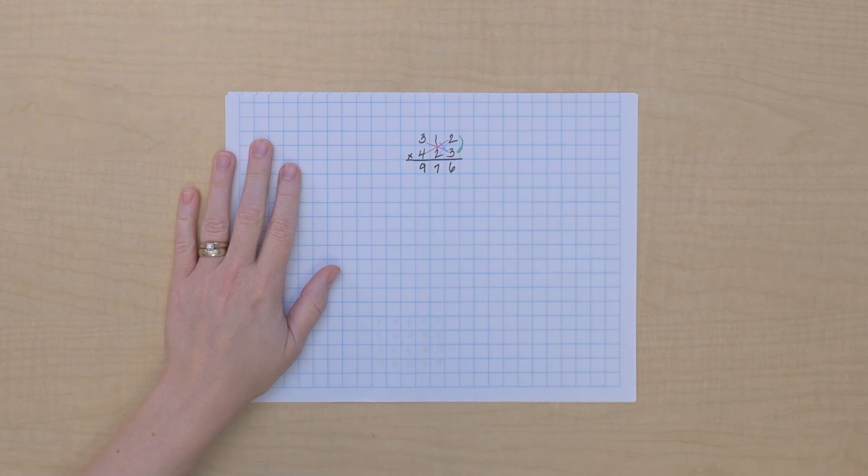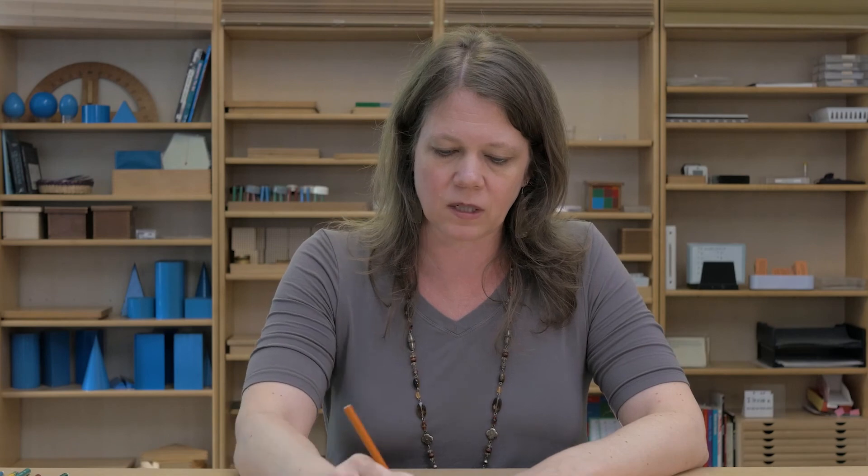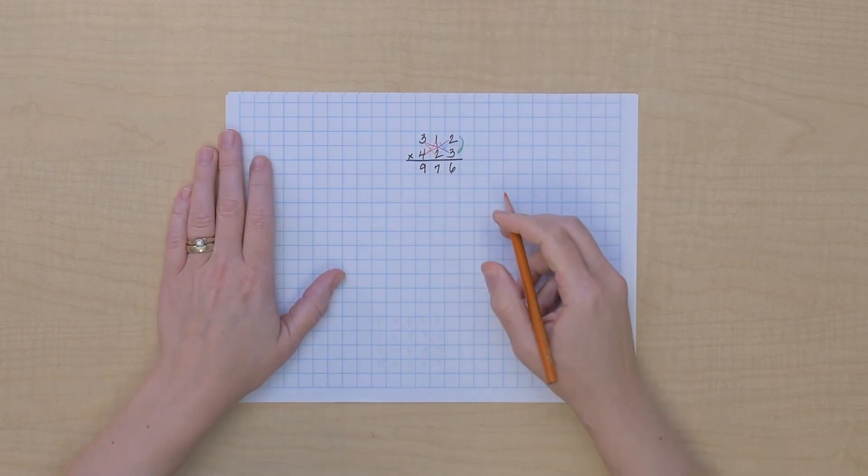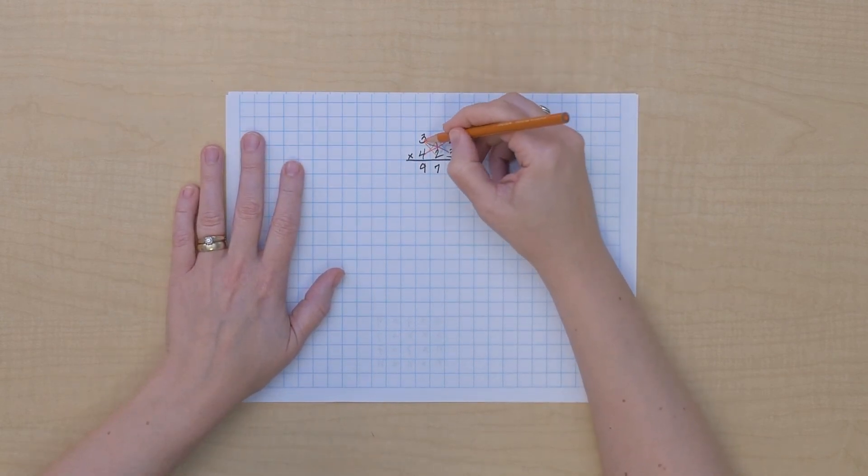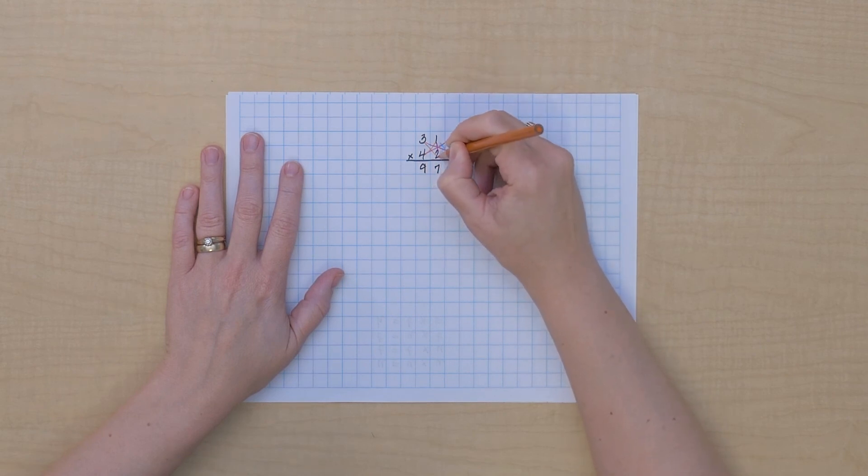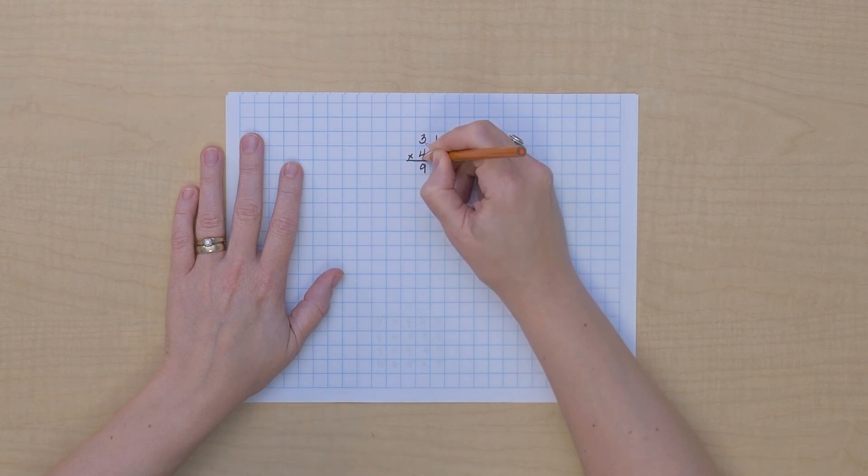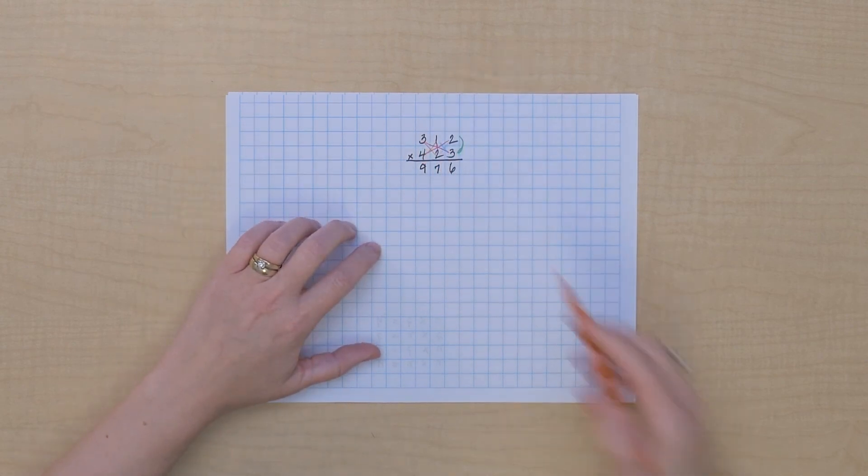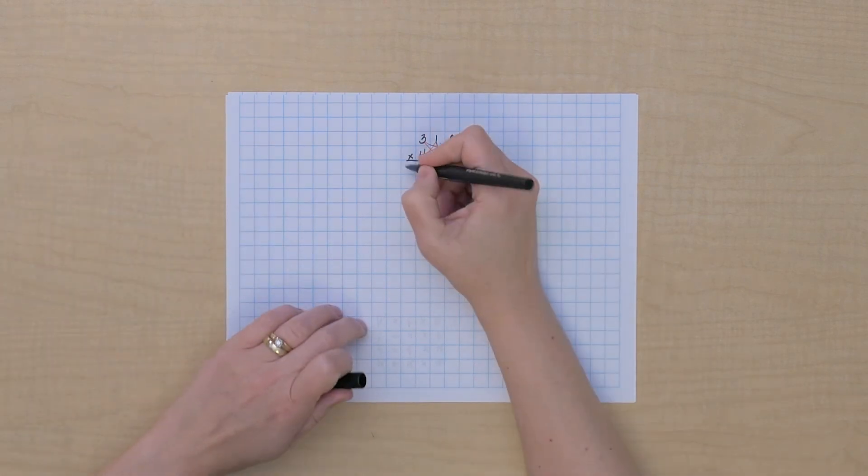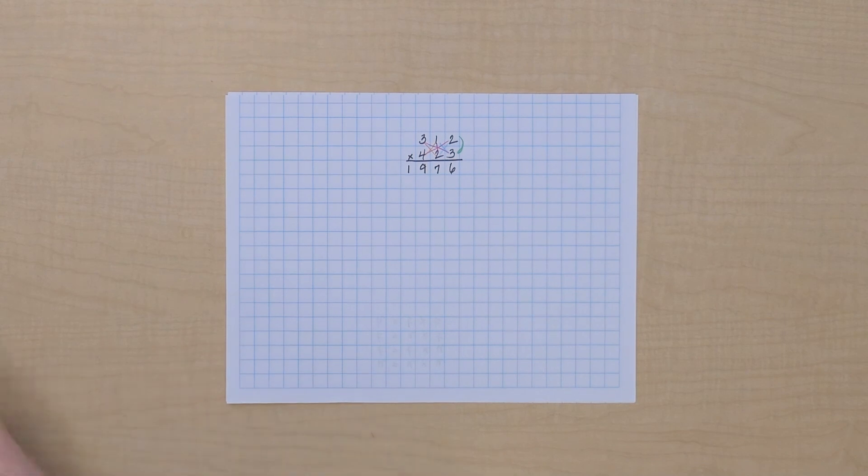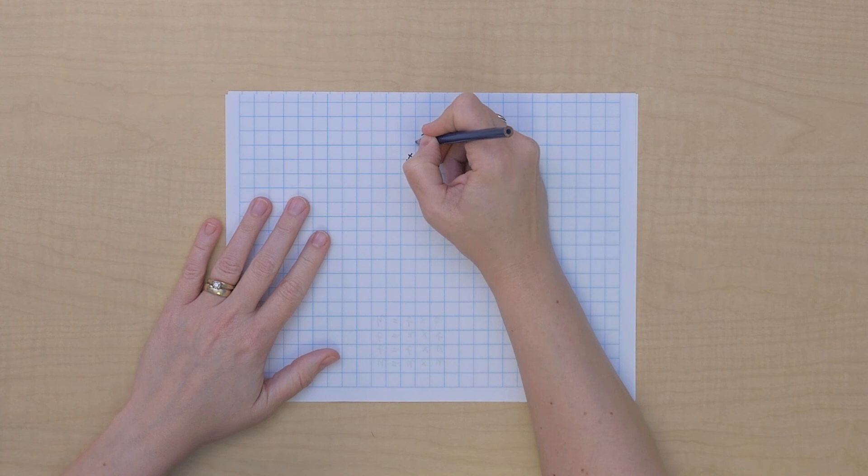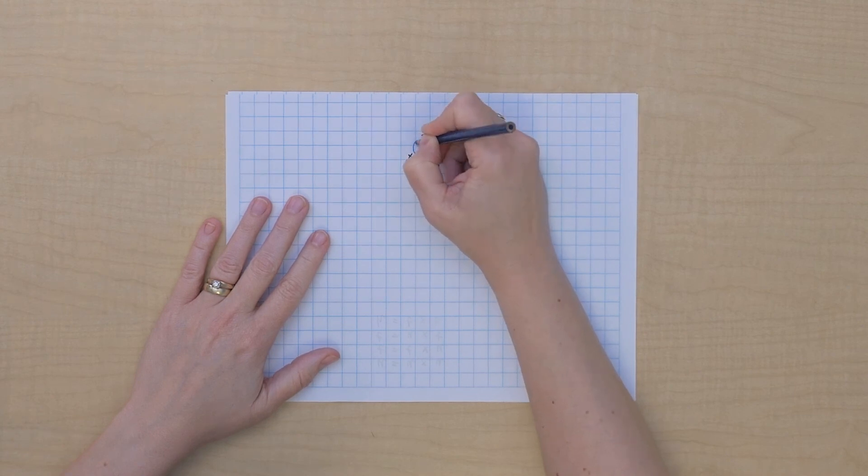All right, so for thousands multiplications, what do we have here? What's going to give us thousands? So hundreds times tens will give us thousands, and tens times hundreds will give us thousands. So let's do those multiplications. We've got three hundreds times two tens is going to give us six thousands, and one ten times four hundreds is another four, so that's ten, plus the one we're remembering, so that's eleven. So we'll write down the one, but then we'll remember that one ten thousand, because we have one last multiplication to do here, which is our hundreds times hundreds, which gives us ten thousands.